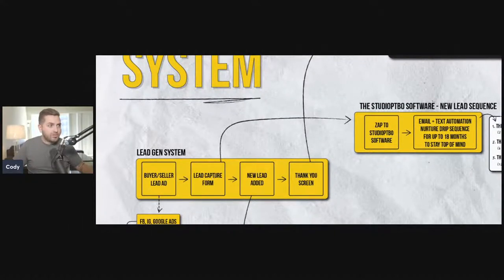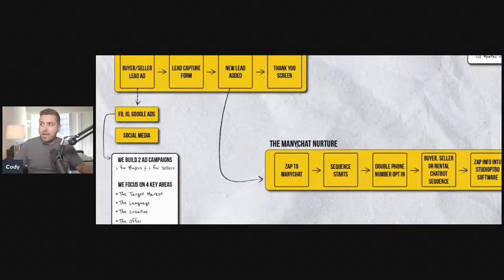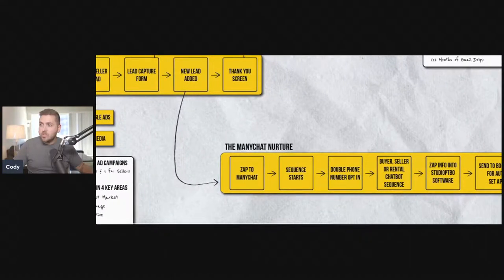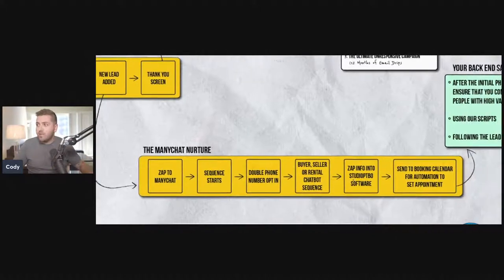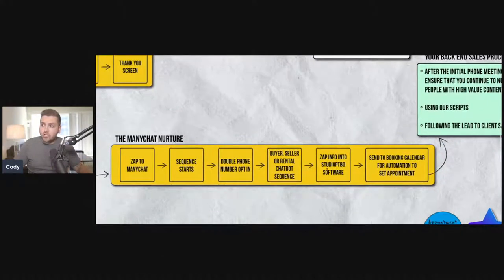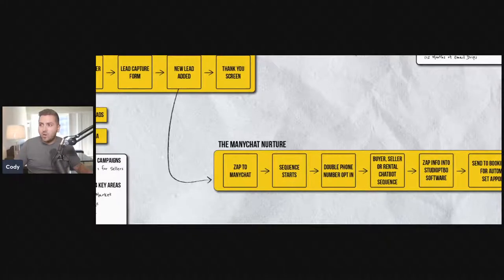Essentially how it works is you have your buyer and seller lead ad. We capture the lead's information - their name, email address, and phone number. The new lead gets added to a chatbot. We use a program called ManyChat that starts a sequence. We get a doubled phone number to make sure they give us the right number. We put them through a buyer, seller, rental chatbot sequence. We zap all the information into our Studio PTBO software and send them a booking calendar for automation to set an appointment.